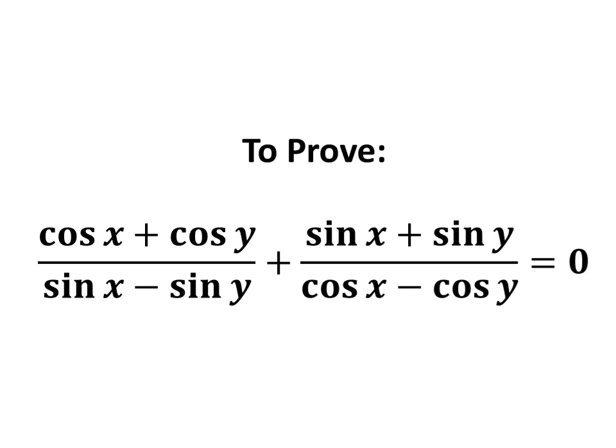In this video, we will learn to prove the trigonometric identity: cosine of x plus cosine of y upon sine of x minus sine of y, plus sine of x plus sine of y upon cosine of x minus cosine of y, is equal to 0.